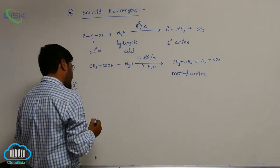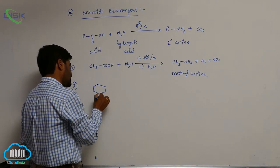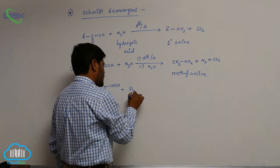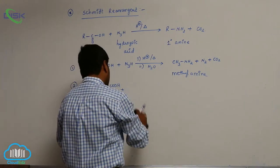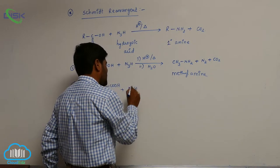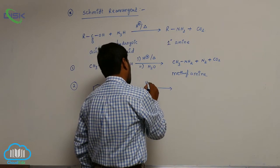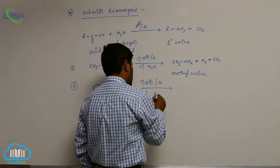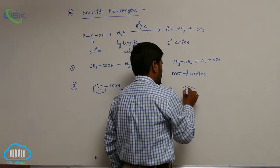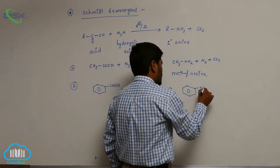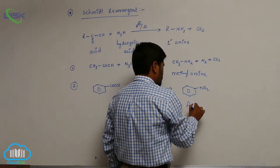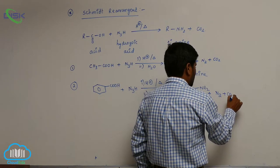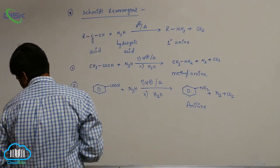The second example is benzoic acid. When benzoic acid reacts with hydrazoic acid in the presence of acid medium, followed by hydrolysis, it forms aminobenzene, commonly known as aniline, with loss of nitrogen gas and carbon dioxide.